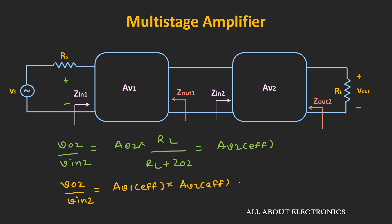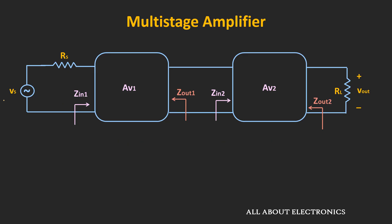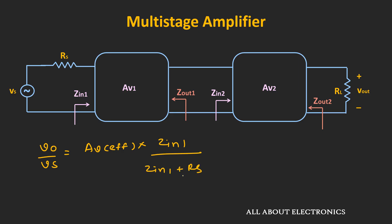To find the gain Vout2 / Vs, we also need to account for the series source resistance. So Vout2 / Vs equals Av_effective × Zin1 / (Zin1 + Rs). In this way, we can find the overall voltage gain of the multistage amplifier.